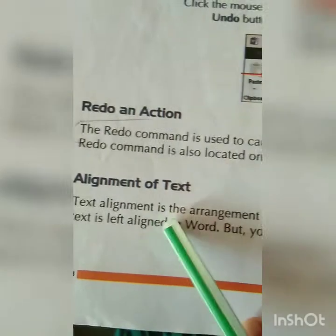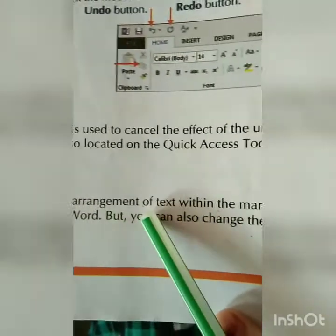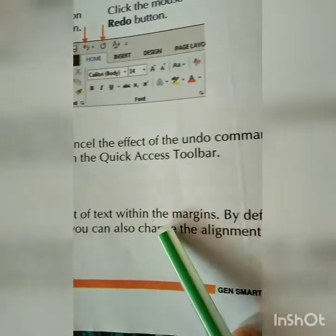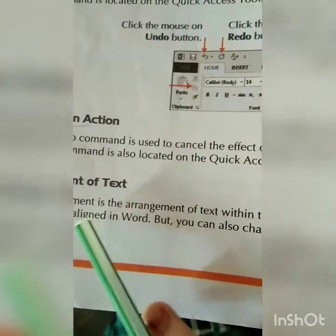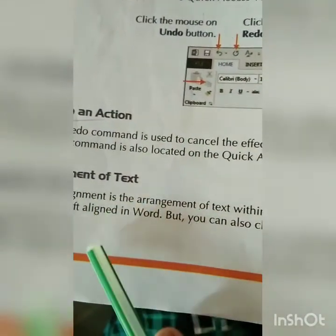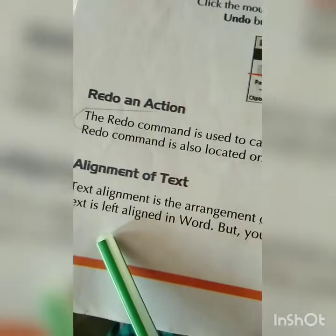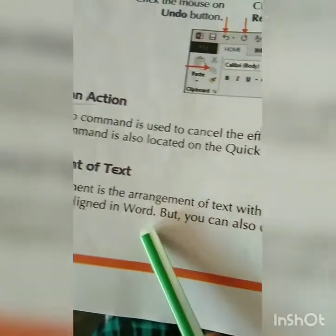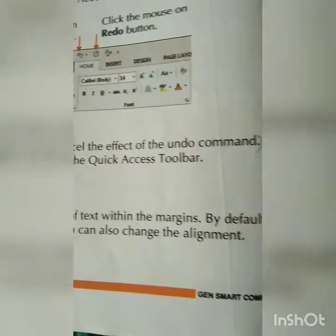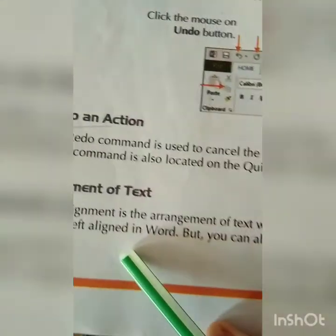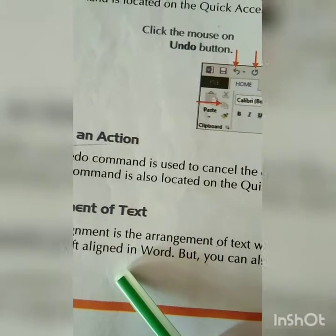Text alignment is the arrangement of text within the margins. That means you are going to type in the monitor by giving a proper margin. By default the text is left aligned in Word but you can also change the alignment. By default alignment is given at the left side.